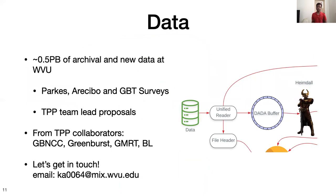We already have around half a petabyte of archival and new data at WVU from various surveys done in the past, some of which has been led by TPP team members. We also have data sharing agreements with different collaborations, for example GBNCC, Greenburst, GMRT, and Breakthrough Listen, wherein we have a policy of sharing and then searching the data. Also, if you have some data and you want to get it searched, either for pulsars or FRBs, let's get in touch — we are actively looking for collaborations and will do a really sensitive search on your data.